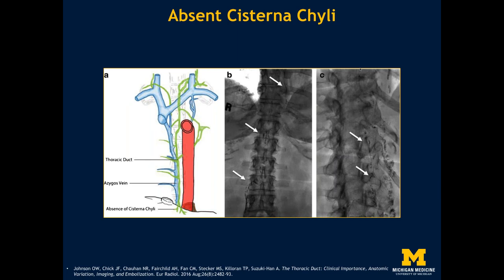This is an example of absence of the cisterna chylae. Most times after work the cisterna chylae or dilation can be visualized as an access point for embolizing lymphatic disorders. But sometimes there is no true dilation, and we call that absence of the cisterna chylae. This is important because it leads to challenges when treating the thoracic duct — there's no great site for access.